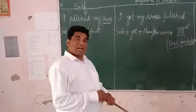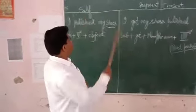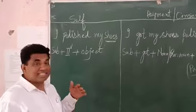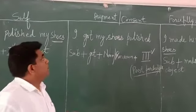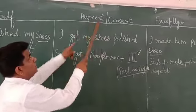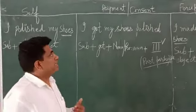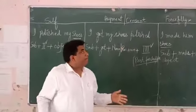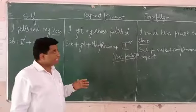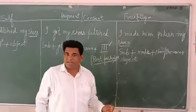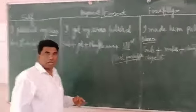There are different ways of doing work. The very first one is when we do the work by ourselves. Sometimes we don't do the work ourselves — we get the work done, making a payment to someone. And sometimes we don't pay but get consent. Another case is when we force or compel a person to do something.